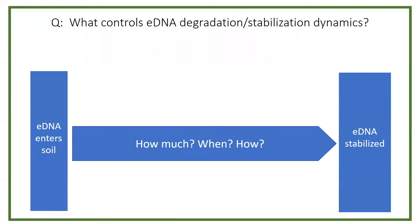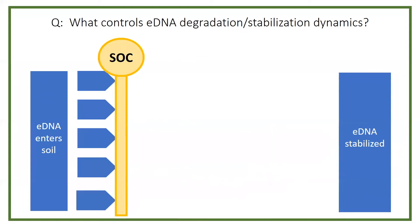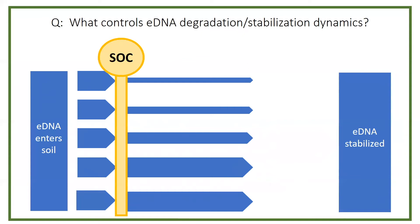The first follow-up question was what's controlling those degradation dynamics. The decoupling tells us that something happens between eDNA entering the soil and some portion ultimately being stabilized, and we have many questions about how much gets stabilized, over what time scales, and by what mechanisms. Our results suggest that soil carbon is one control on that pathway toward stabilization, but it's not the only thing — there are other processes controlling whether eDNA entering the system is ultimately stabilized.